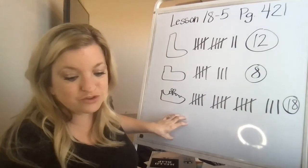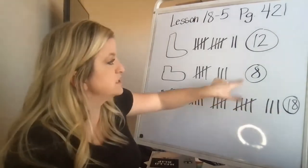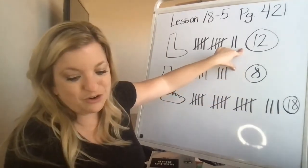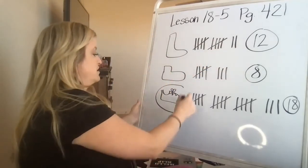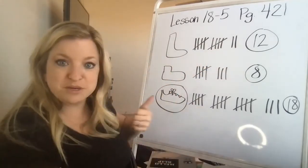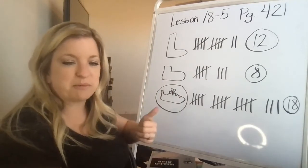So then it says circle. Write the number for each object—we wrote it down. Then it says circle the one that the children most like. They most like tennis shoes. Thumbs up. Is that your favorite too? Yeah, it's probably mine as well.